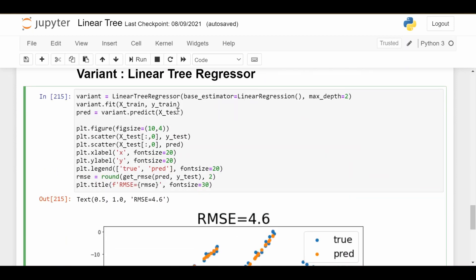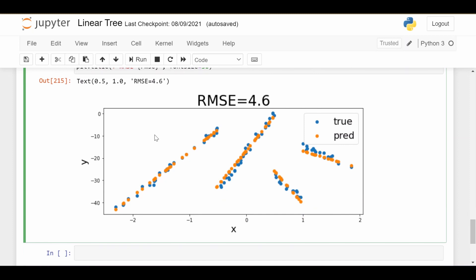We predict in the exact same way as well, and we get these much better predictions with a much better RMSE of just 4.6.